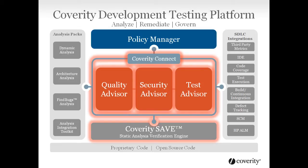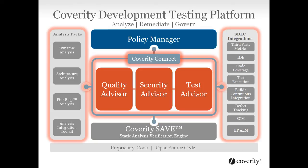Coverity Connect, the unified issue management console, provides a single view of all issues surfaced by Quality Advisor, Security Advisor, and Test Advisor for quick and easy remediation. It connects issues to your code and your workflow, and connects developers across geographies and teams. The platform integrates seamlessly into your existing development process to analyze and remediate issues within your existing software development lifecycle. You can manage analysis data from Coverity or third-party analysis engines to manage multiple types of issues to resolution in the same console and a common workflow.